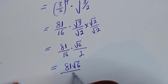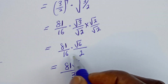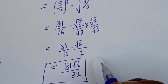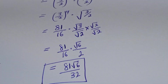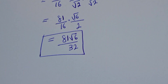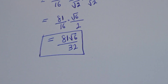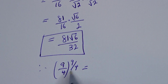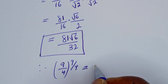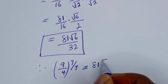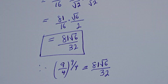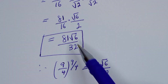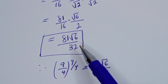This gives us 81 root 6 over 16 times 2, which is 32. This is the final answer. Therefore, 9 over 4 to the power of 9 over 4 is equal to 81 root 6 over 32. I hope you enjoyed the video — please don't forget to like, share, comment, and subscribe to my channel. Thank you, bye bye.